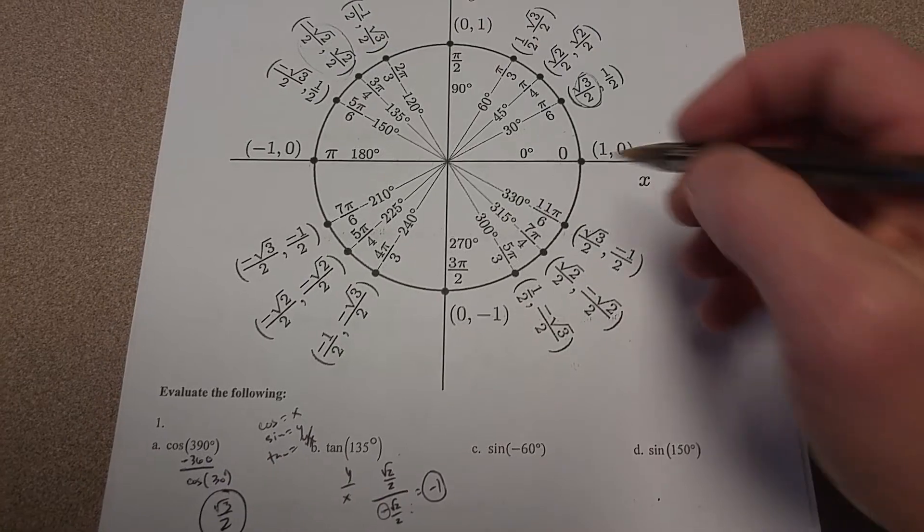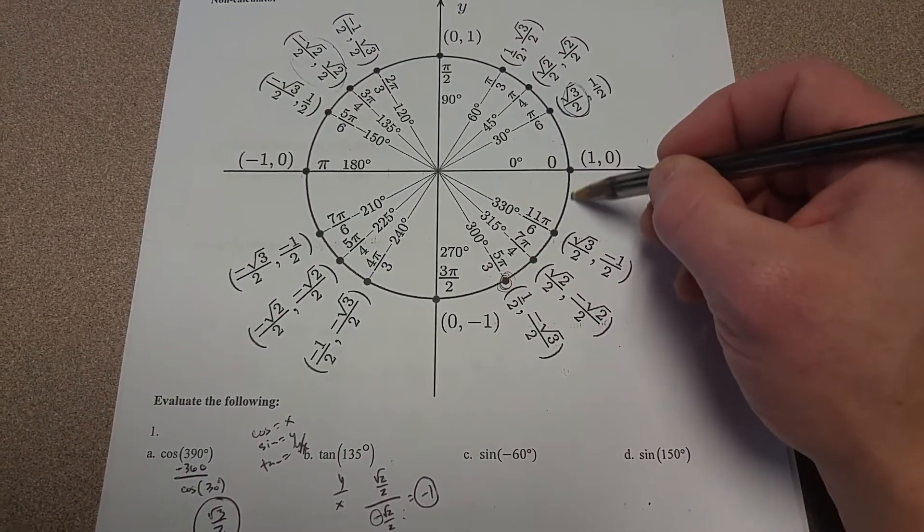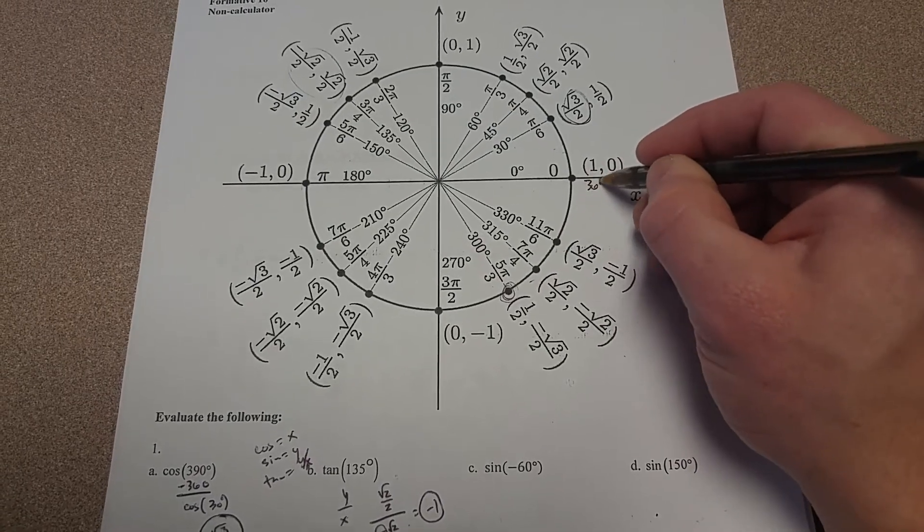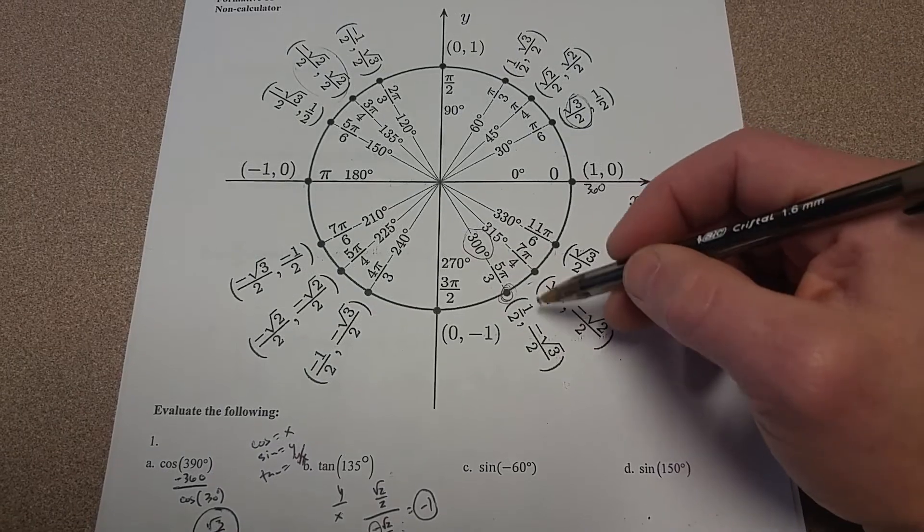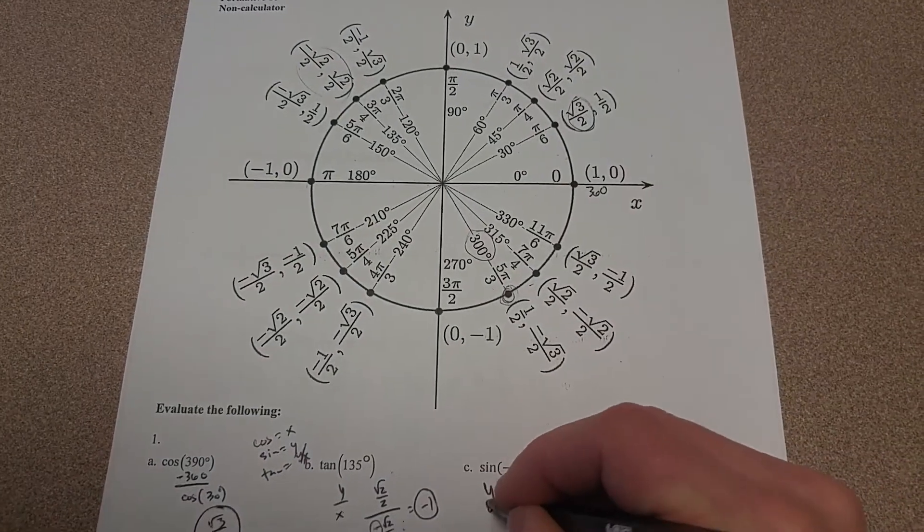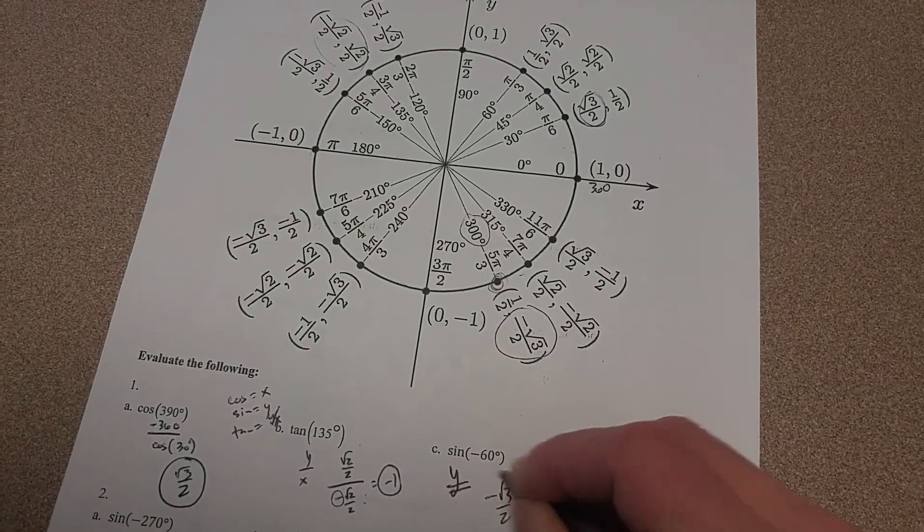Negative 60. So you can either go to positive 60 and then reflect it, so we're right here. Or you can take 60 degrees away from 360, which puts you right on 300. So I'm looking at this point right here. The sine is the Y coordinate, and so the Y coordinate here is negative root 3 over 2.